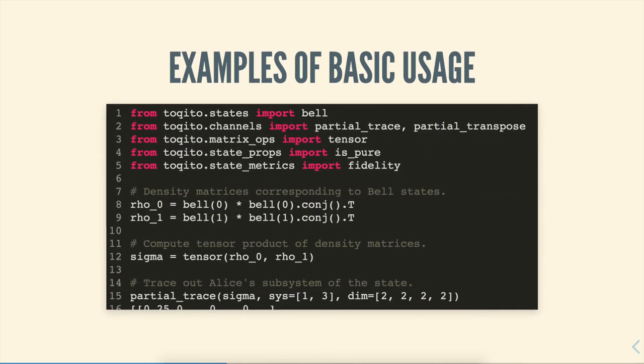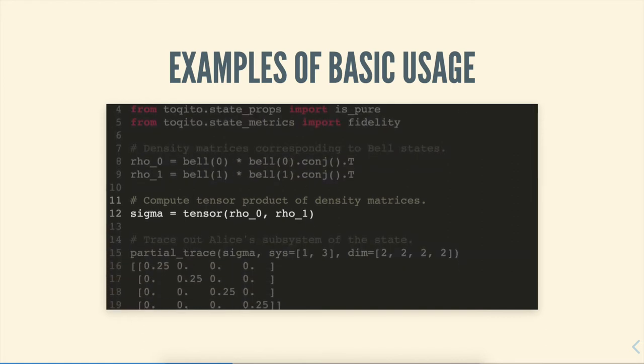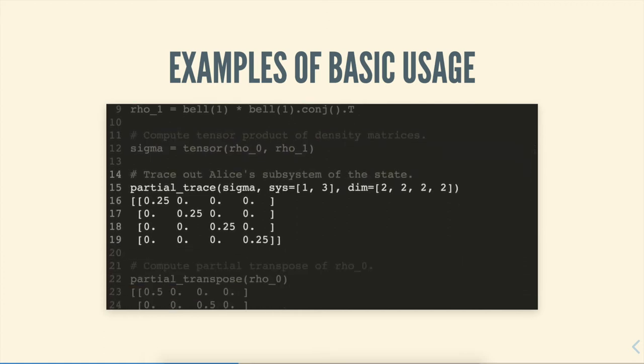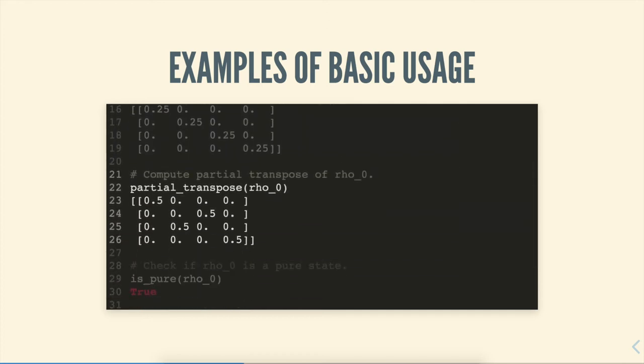So we're just going to breeze through this part and showcase a number of basic usages or some things that one would expect that any general purpose quantum information library would be able to provide them with states. So in this case, we're computing the tensor product of rho 0 and rho 1. So we're storing the result in this variable sigma. Of course, you can take any number of vectors or matrices and pop them into the tensor product function to compute the tensor product. A very common operation that exists in quantum information is performing the partial trace. And that is just taking a subset of an overall quantum system. In this case, we're taking the sigma variable that we computed above line 12 and computing the partial trace on a specific number of subsystems, namely the first and third subsystem of this overall system. And we're also able to specify the dimensions of each of the four subsystems of this particular state. Another common operation that also exists in quantum information is the partial transpose, which is used frequently for things like separability detection. And we're just computing the partial transpose on the state rho 0.